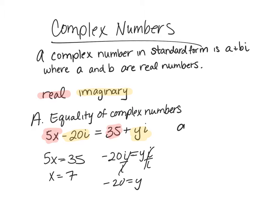So here's another example: 9 plus 4yi equals 3x minus 8i. This is a good time to pause the video, figure it out yourself and then watch me do it. So here's my real parts: 9 and 3x. So 9 has to equal 3x, so x has to equal 3.